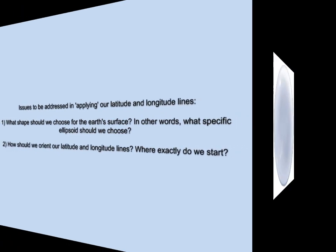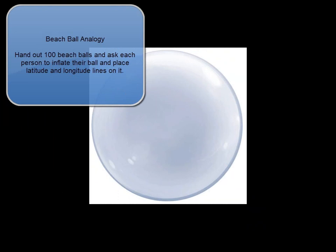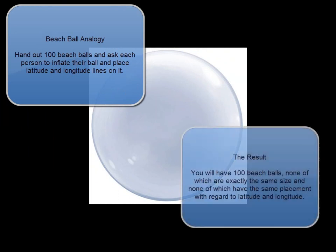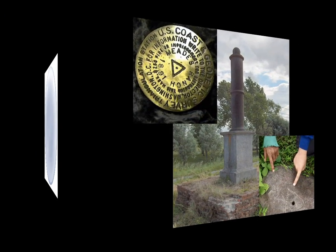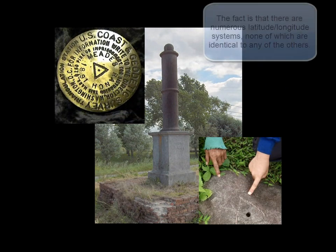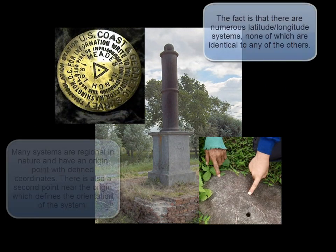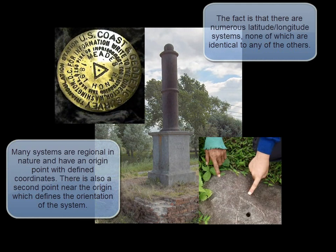The problem is analogous to handing out a hundred clear beach balls and asking each person to inflate their ball and place latitude and longitude lines on it. What you'll get back will be a hundred beach balls, none of which have exactly the same size and none of which have the same exact placement with regard to the latitude and longitude lines. A datum is an adopted ellipsoid and a precise set of defining parameters for a geographic coordinate system. Regional datums, sometimes called local datums, have as their origin some physical point in reference azimuth.